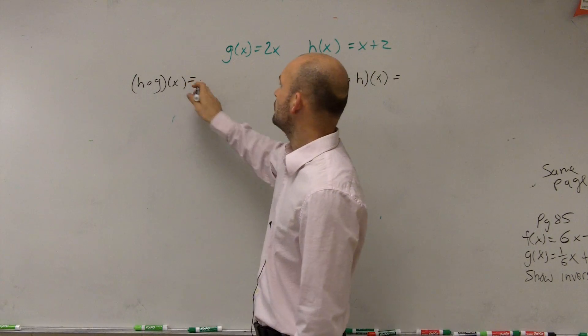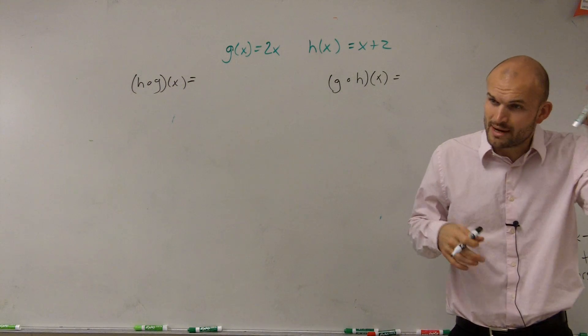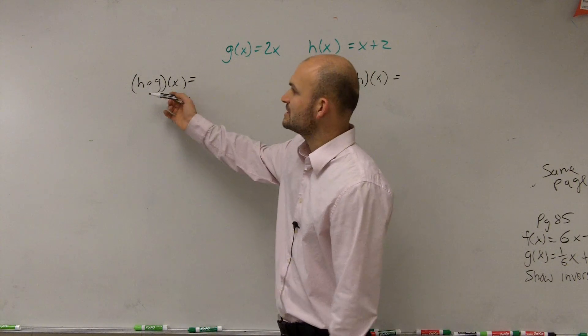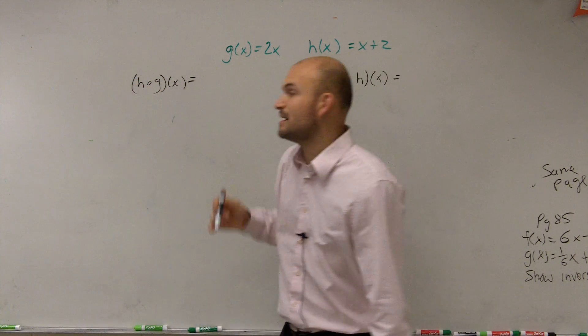OK, so when looking at it as it's written like this, we need to remember what the composition written in this format represents. Well, what this represents is h of g of x. That means I need to evaluate g of x into my h of x function.